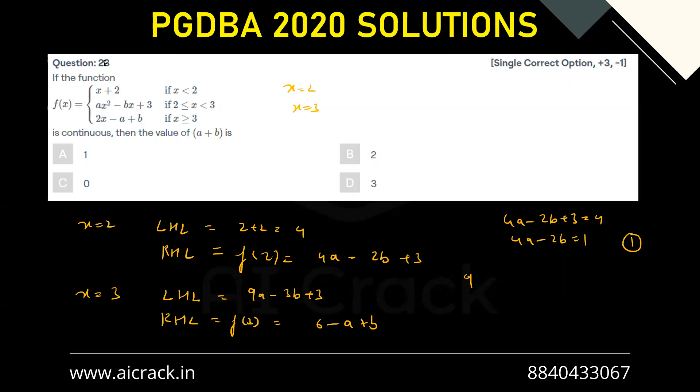And both of them should be equal, so basically 9a minus 3b plus 3 equals to 6 minus a plus b. That would give me 10a minus 4b equals to 3, so this is my second equation.